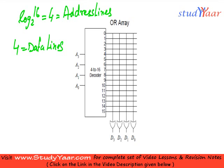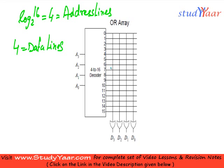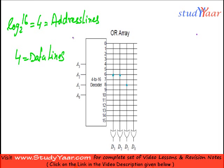We program it by blowing fuses. What I can do is indicate connections at various points — there is a connection here, here, here, and here. Now, when I select the 6th output line of the decoder, how do you select this? You select it by giving a particular input to that line.